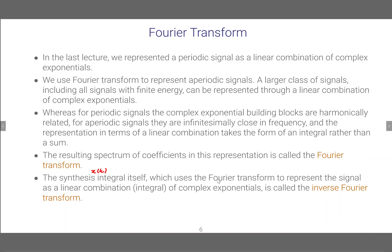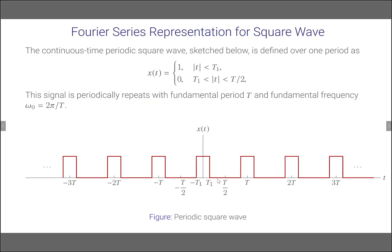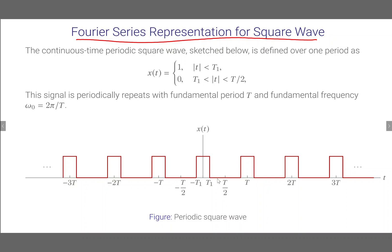The synthesis integral — that means constructing a signal x(t) using the Fourier transform to represent the signal as a linear combination, or an integral, of complex exponents — is called the inverse Fourier transform. For the Fourier transform, the symbol we use is capital X(jω). Now let us develop this Fourier transform representation starting from the Fourier series. We understood how to obtain the Fourier series representation of the square wave which has period T. One period is 1 when the modulus of t is less than T₁, and 0 otherwise.